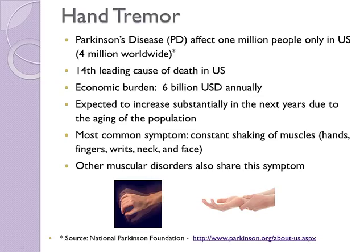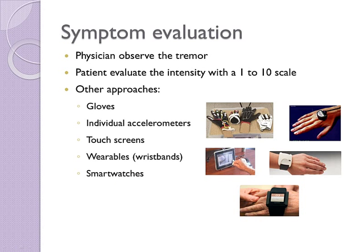The hand and finger tremor is a symptom caused by the shaking of muscles and it is not exclusive to Parkinson's disease. Traditionally, the symptom evaluation is performed by the physician's direct observation or by the patient's subjective evaluation with a 1 to 10 scale. There are also other approaches to measure the intensity of the tremor using gloves, wearables and other systems.